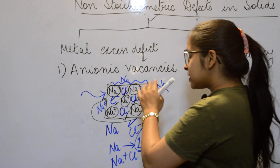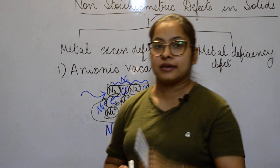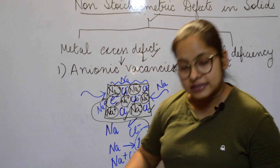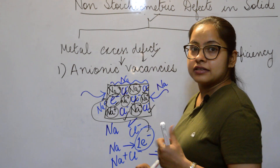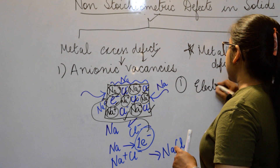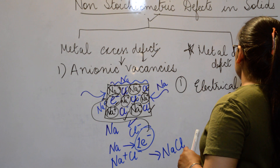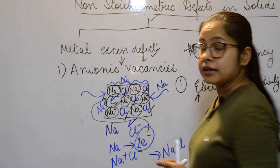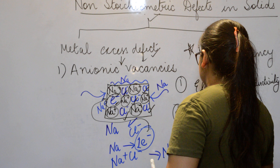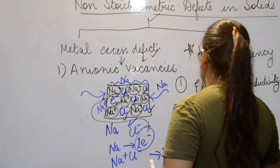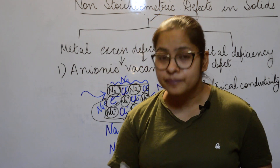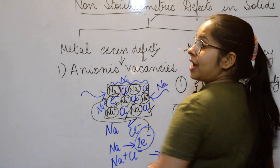Questions will ask: what probable changes will you observe in a crystal because of metal excess defect created by anionic vacancies? First change: because of the extra electron, electrical conductivity will increase or enhance. Second change: the crystal will become paramagnetic. Paramagnetic substances show slight magnetic behaviour but cannot retain magnetism over a longer period of time.